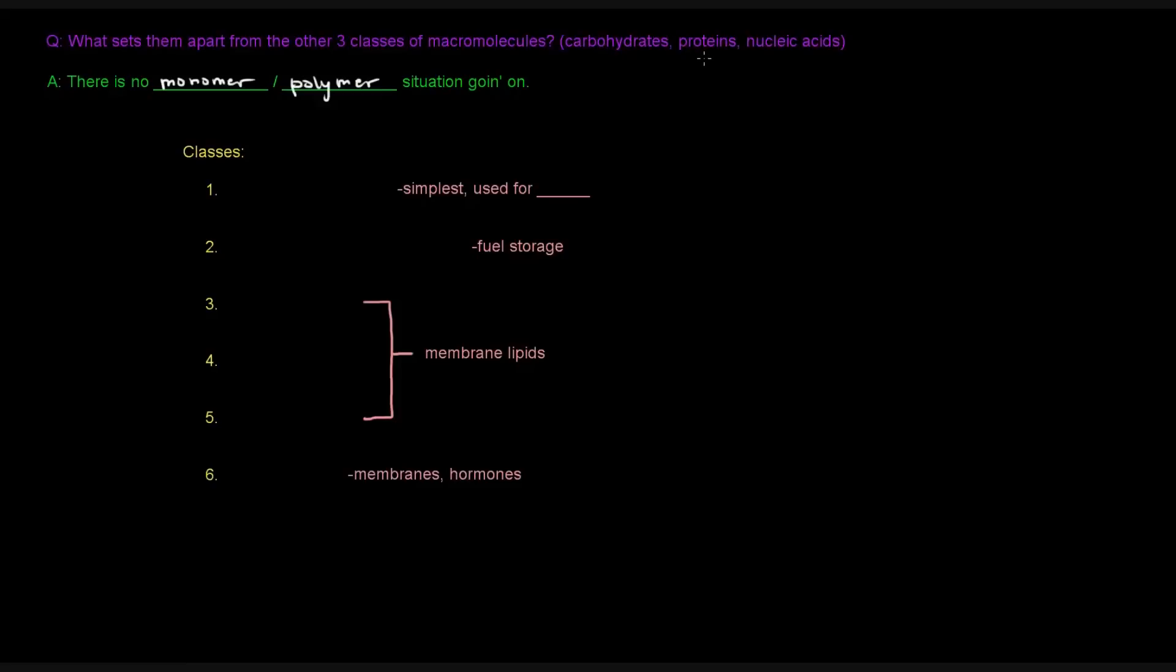In the case of proteins, the monomers are amino acids. The polymers are polypeptides when they fold, can become proteins or are called proteins. And then nucleic acids, the monomeric units are nucleotides.